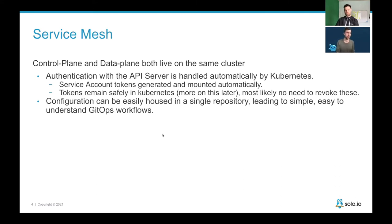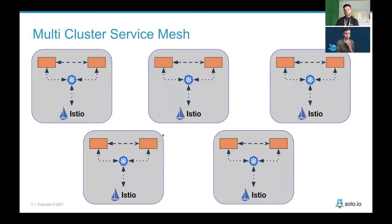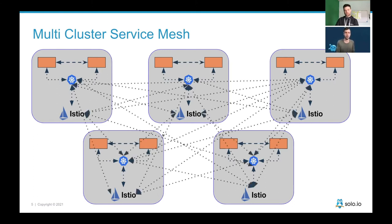Now let's jump to a multi-cluster scenario and begin to explain the complexities and security implications involved. We've taken our single-cluster diagram and multiplied it by five. In this scenario, all of the control planes still need access to the cluster they are running on. But in order for a multi-cluster service mesh to be useful, the Istio control planes also need to be able to read and write to the other clusters. Now all of the Istio control planes have access to every other cluster's Kubernetes API server.